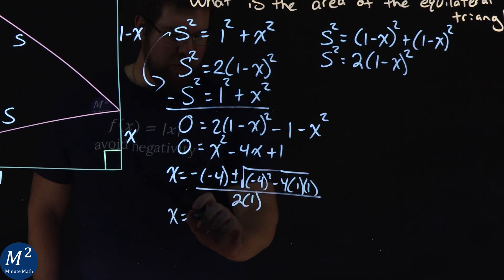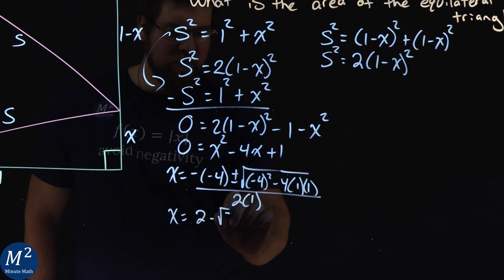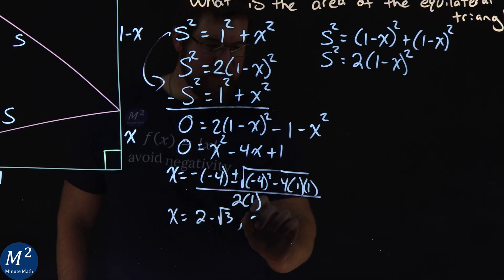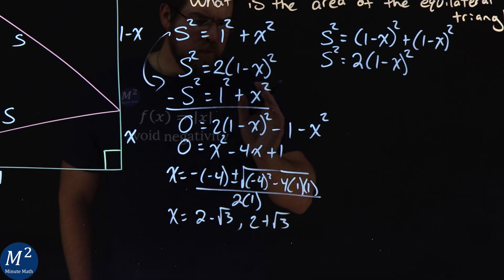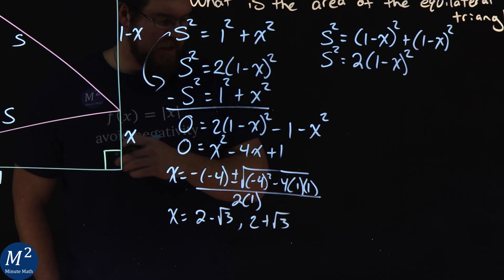Now this simplifies to be, and we have X is 2 minus the square root of 3, and X is 2 plus the square root of 3. So we have two values that X can be here.